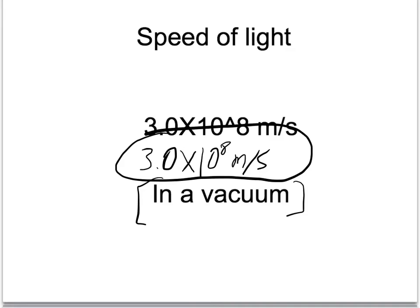So if somebody asks you what the speed of light is, it's 3.0 times 10 to the 8 meters per second, and it's close enough to the speed of light in air that we also use it for that.